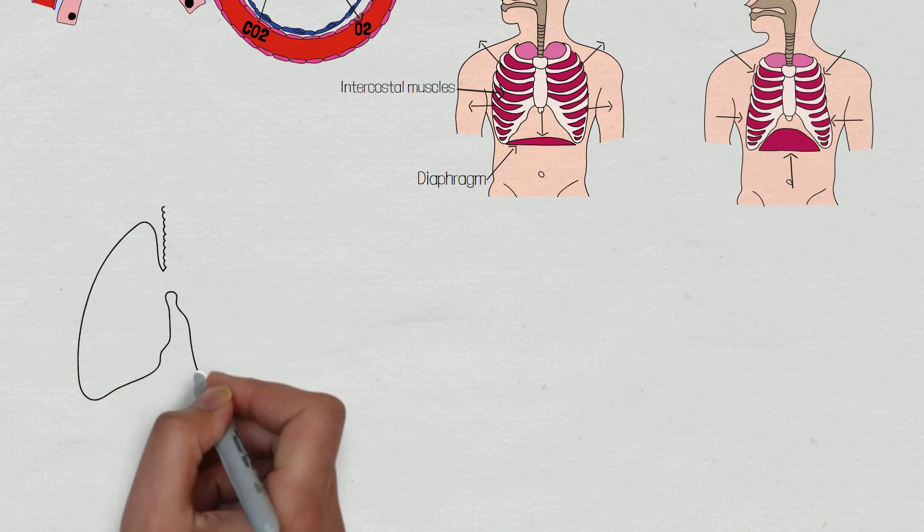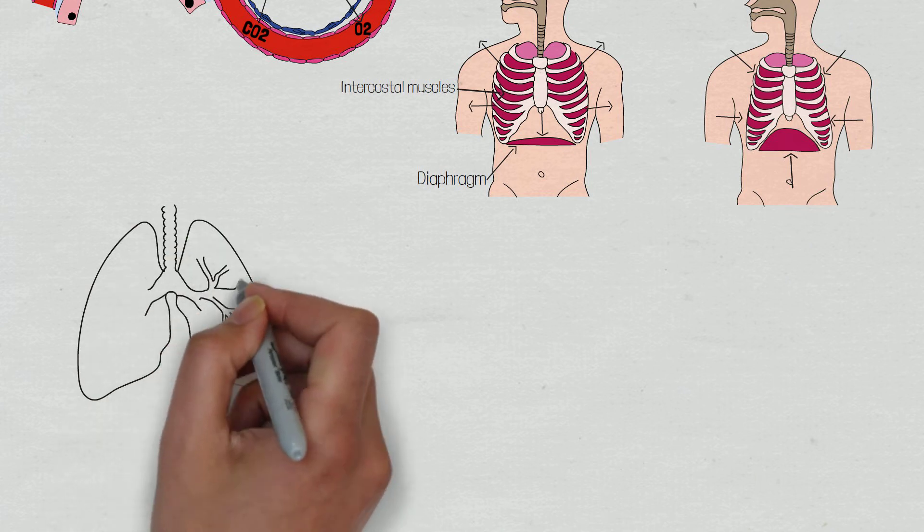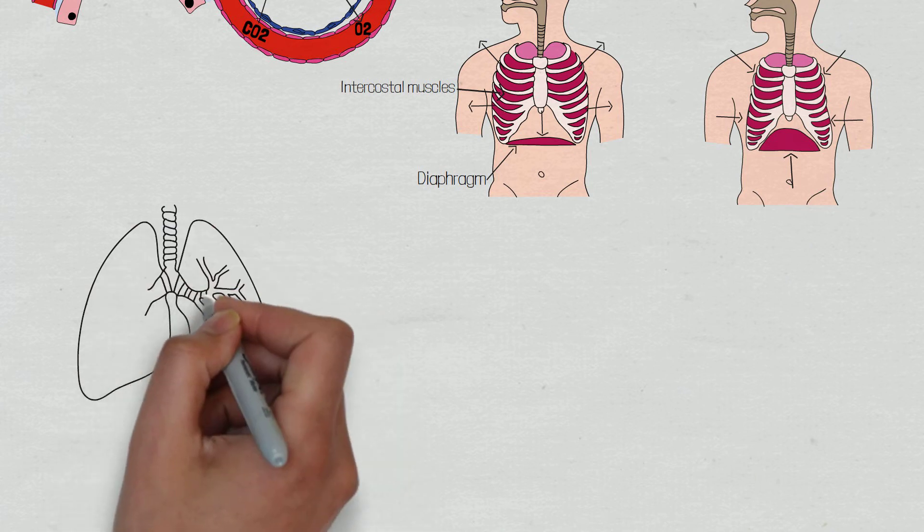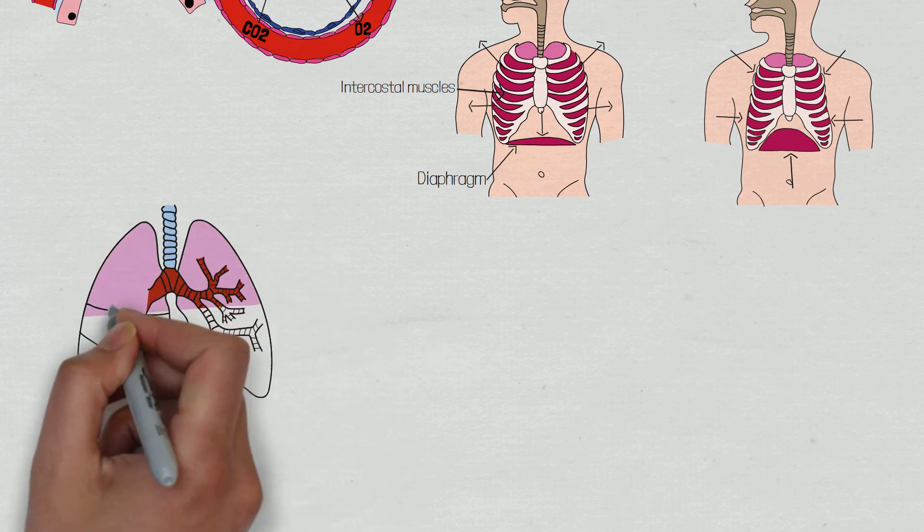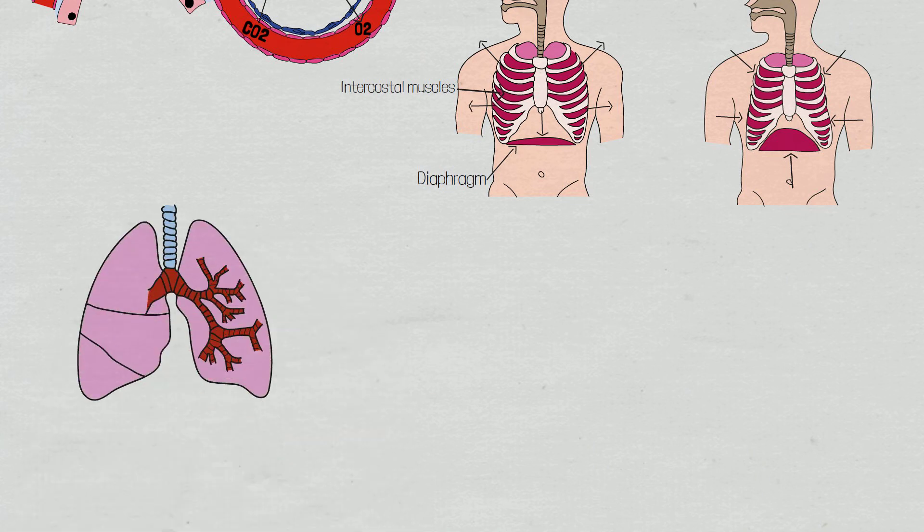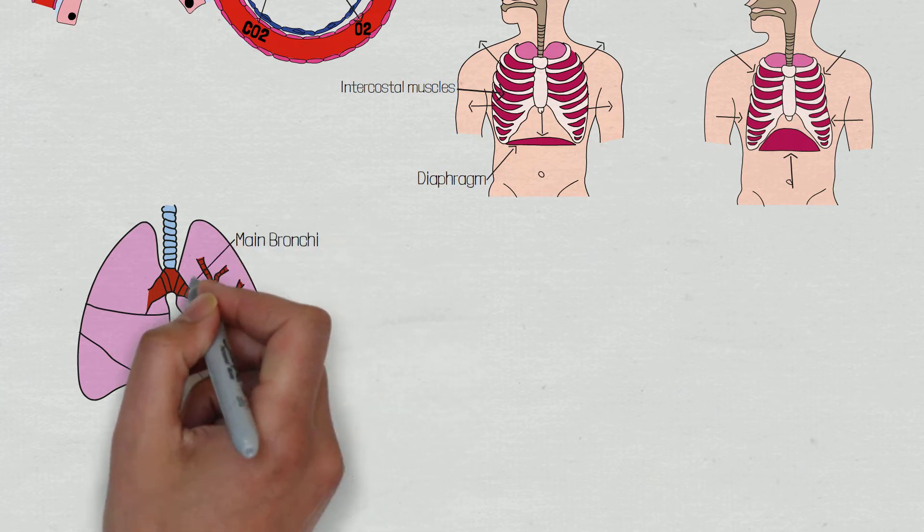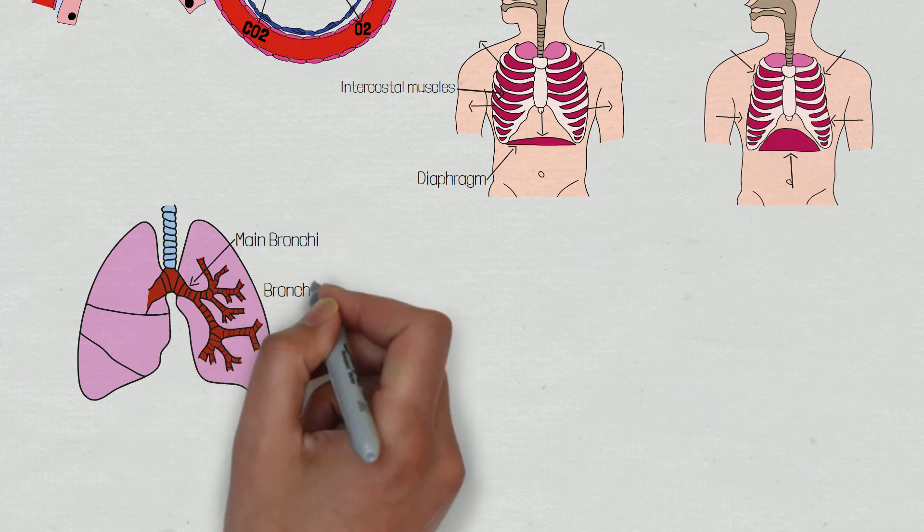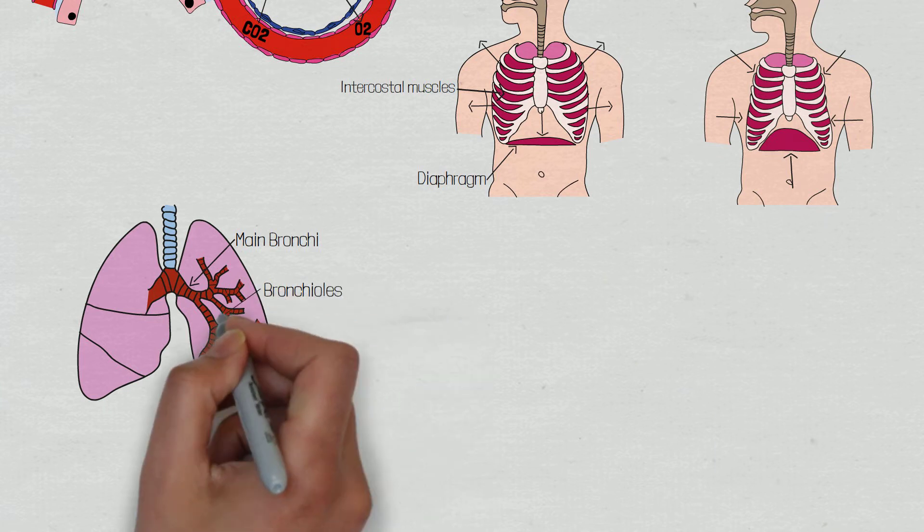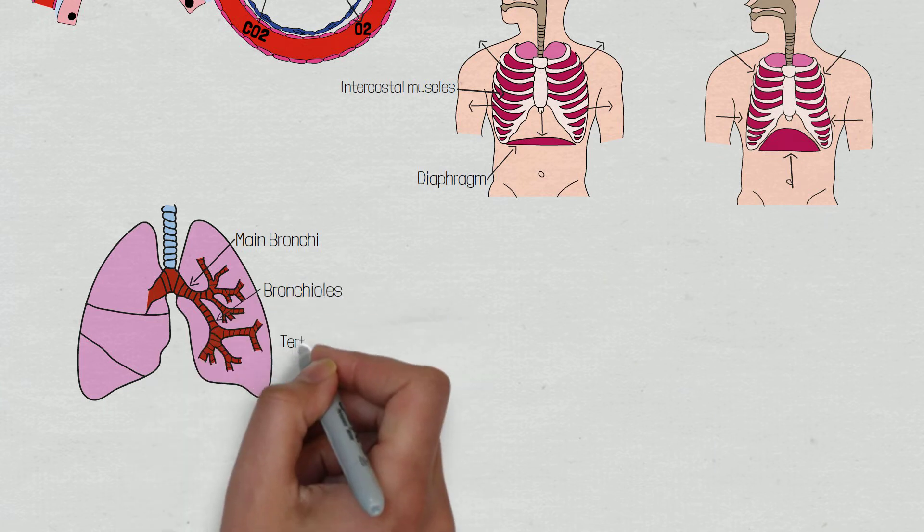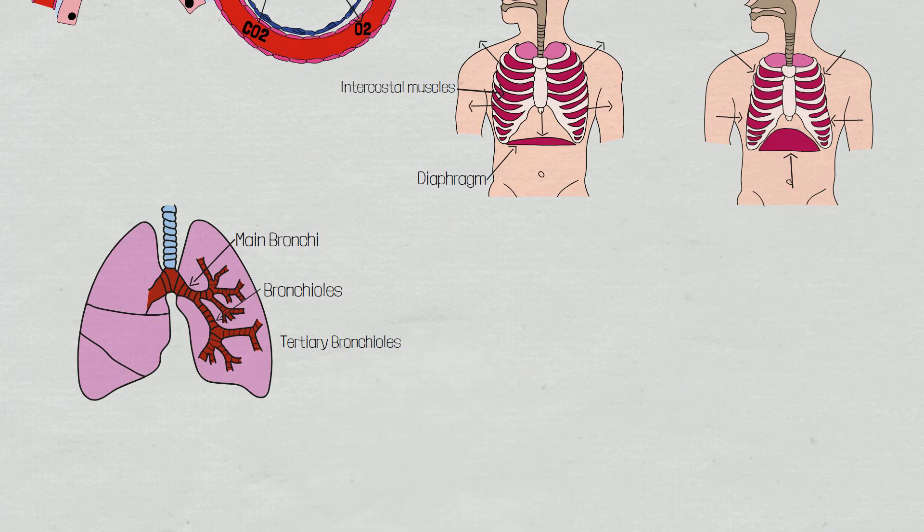In order for air to be exchanged between the atmosphere and alveoli, it must travel through a network of tubes within the lungs known as the small and large airways, which consist of the main bronchi, the bronchioles and the tertiary bronchioles. These airways do not participate in the diffusion of gases, but provide the alveoli with access to the external environment.